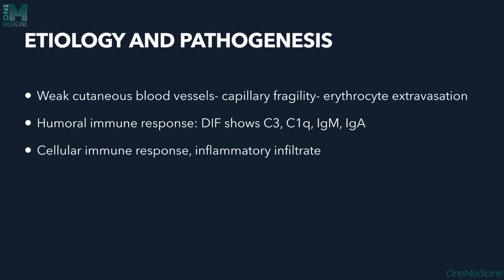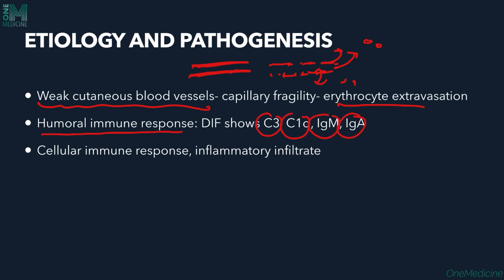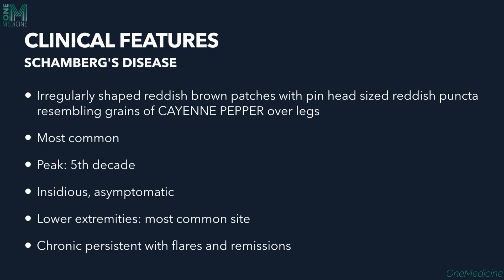Three pathogenic mechanisms are proposed. First, weakened cutaneous blood vessel walls increase capillary fragility, leading to erythrocyte extravasation. Second, the humoral immune system may be activated — direct immunofluorescence has shown C3, C1q, IgM, and IgA deposits. Third, cellular immune response is implicated due to perivascular inflammatory infiltrates seen histologically.